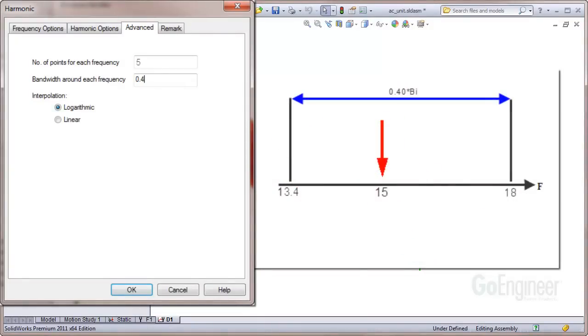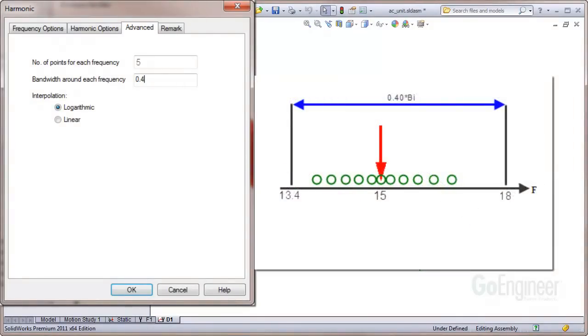We'll zoom in to show the calculation points. Recall we used 5 calculation points on each side of a natural frequency.